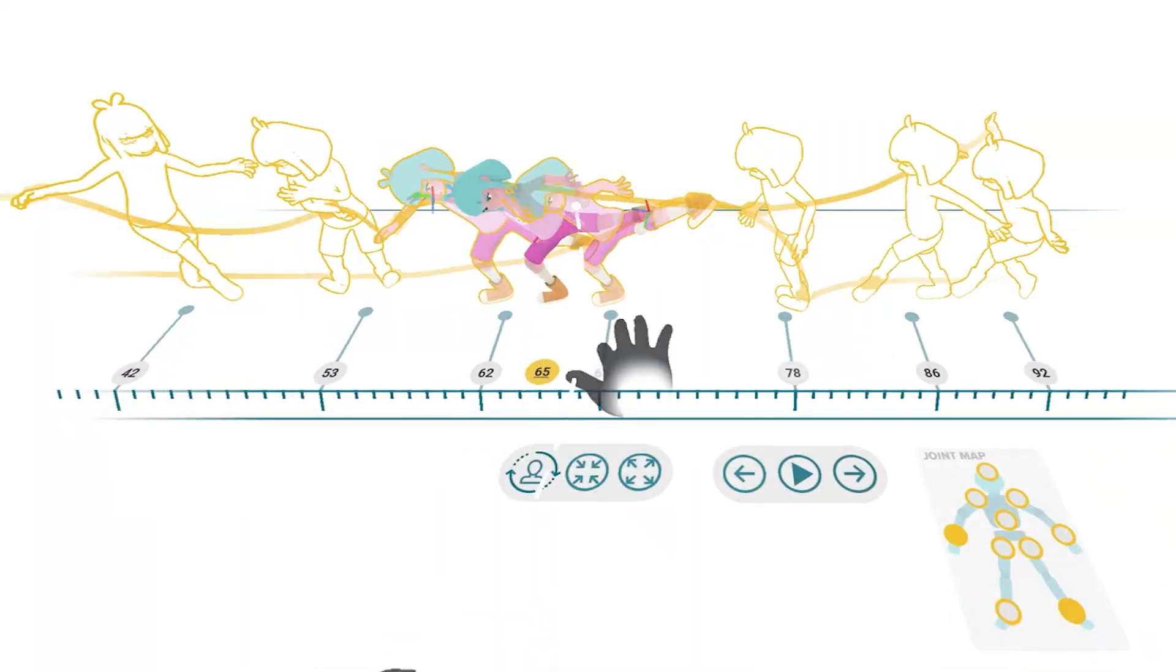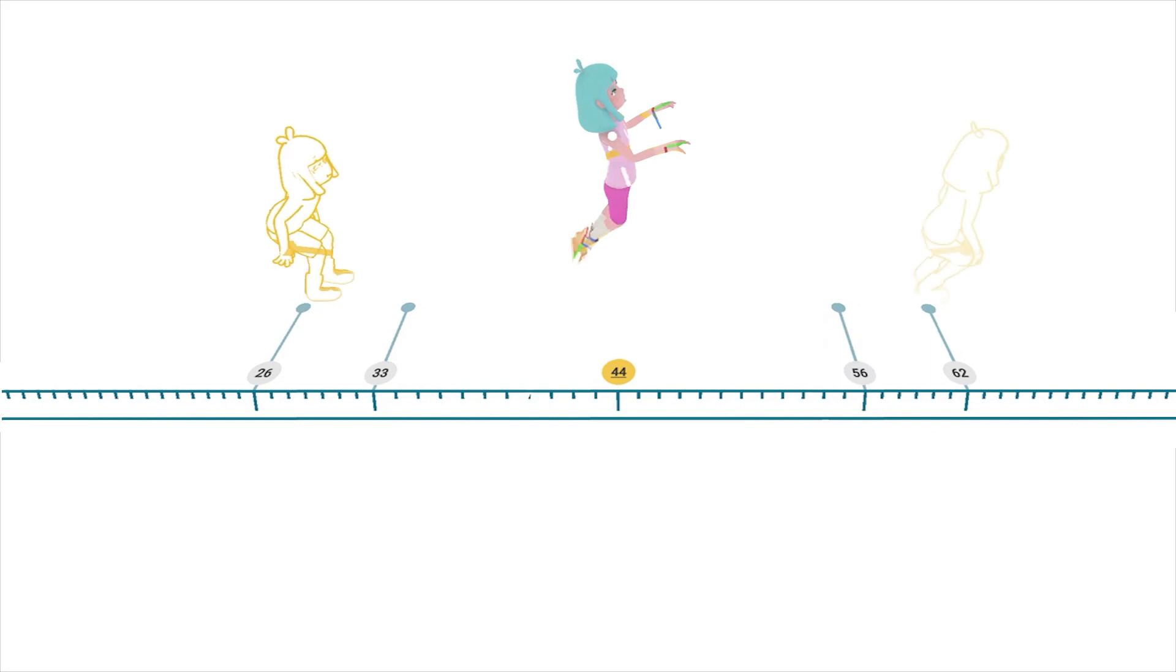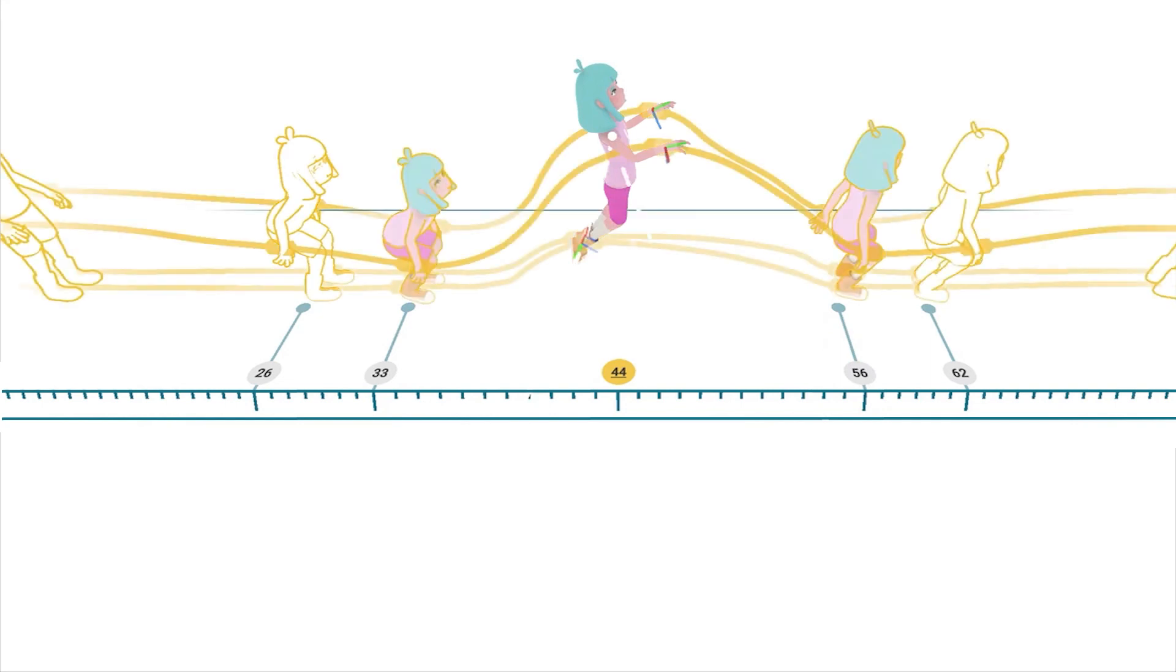To address this challenge, we created Time Tunnel. Time Tunnel works as follows: An individual frame is situated on a timeline. The system computes a set of representative keyposes and overlays the trajectory to show the motion of one or more joints in the in-between frames. By doing this, time is represented in space.